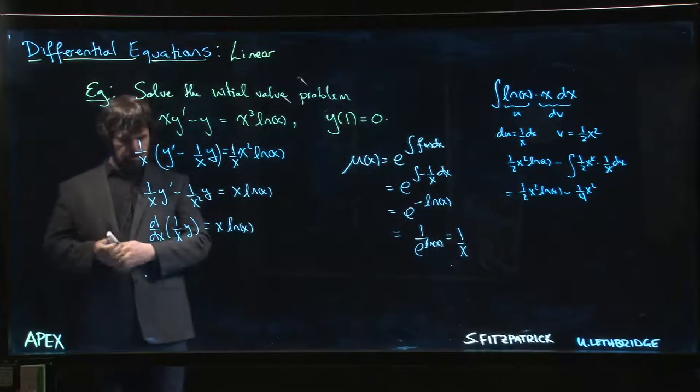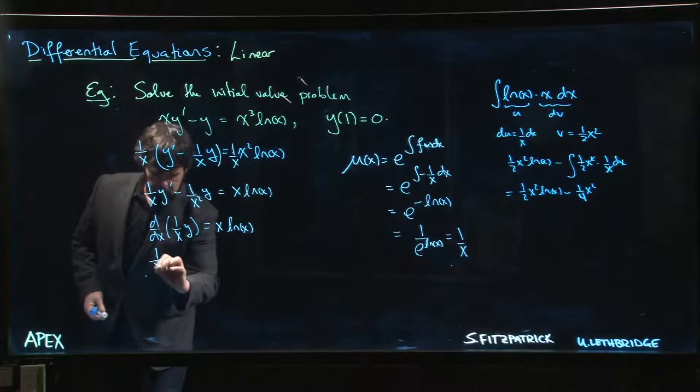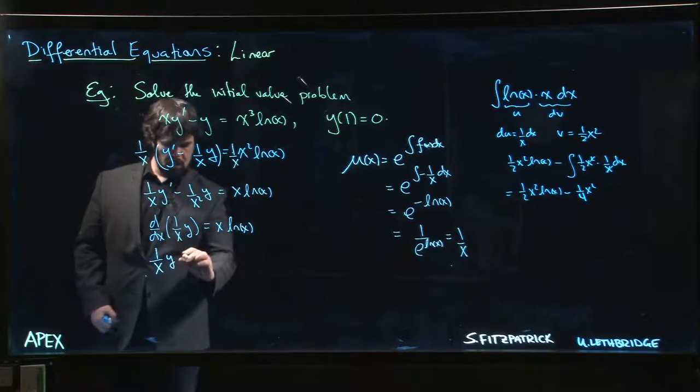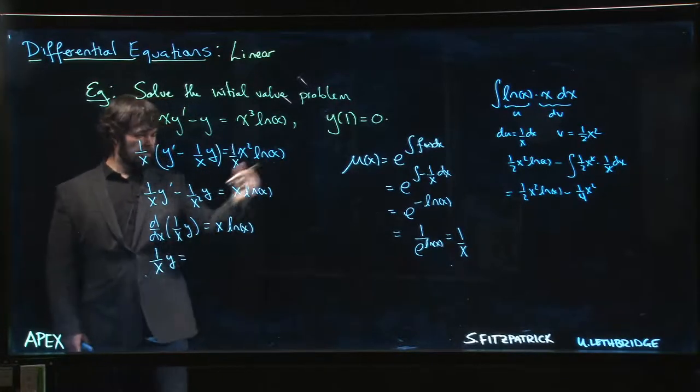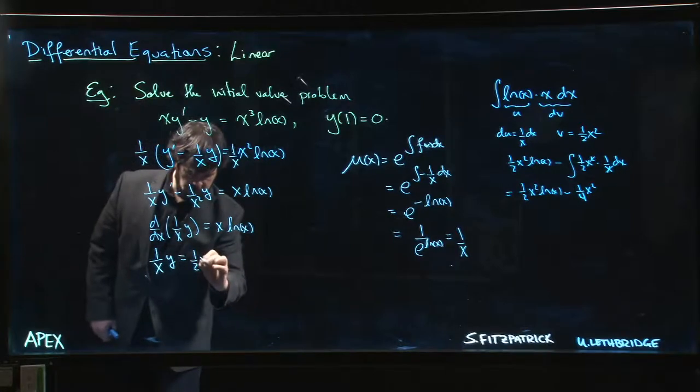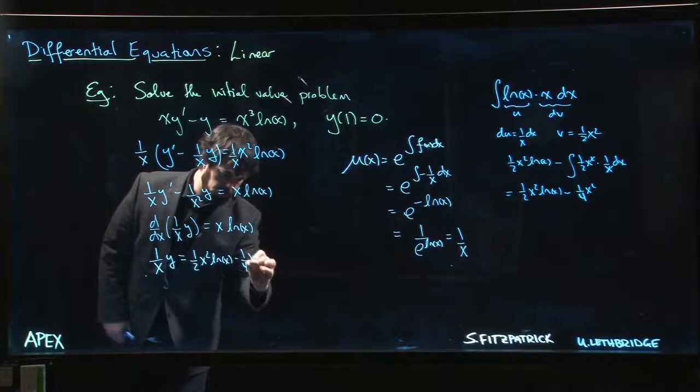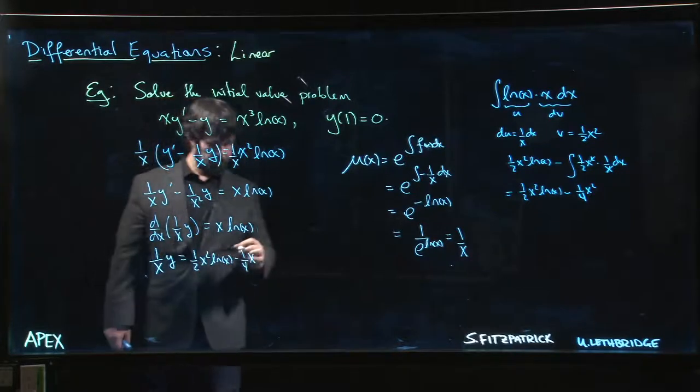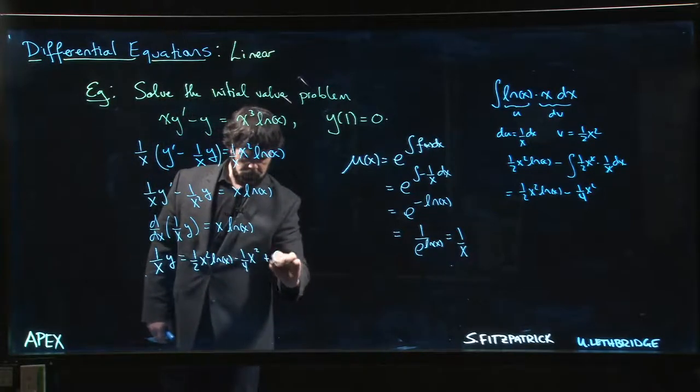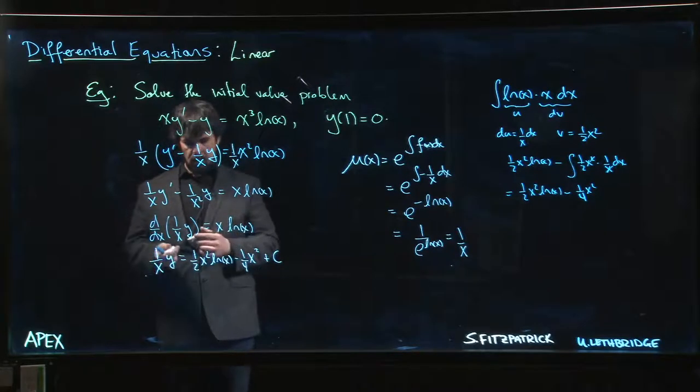Take the antiderivative of both sides. (1/x)y = (1/2)x² log x - (1/4)x², possibly plus a constant.